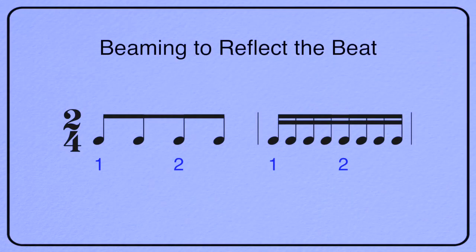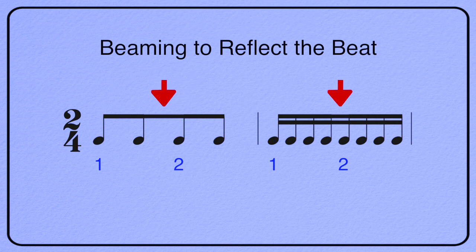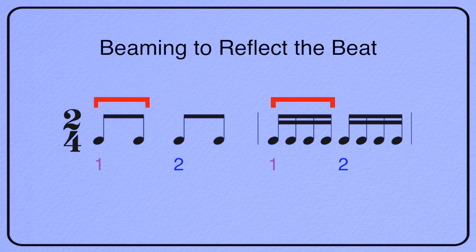We've got beams, but we can't easily tell where each beat starts if we just continuously beam like this. So that's why we're going to break the beams here. Now we have beams within each beat, and we can clearly tell beat one from beat two.